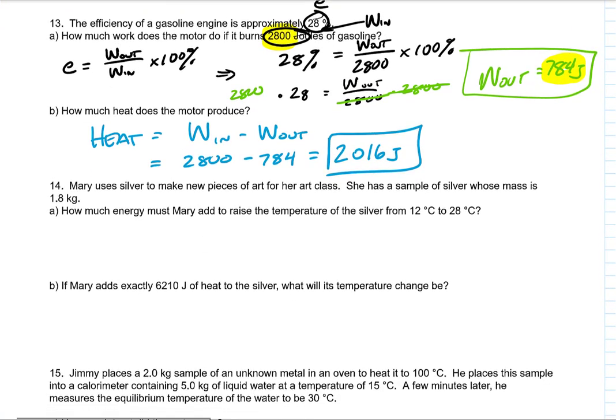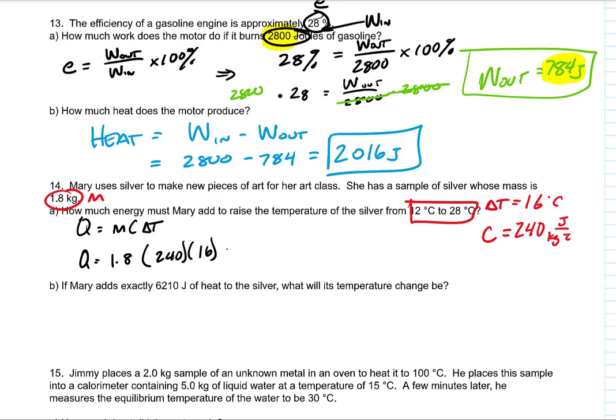Mary uses silver to make art. She has a sample of silver whose mass is 1.8 kilograms. How much energy must she add to raise it from 12 degrees to 28 degrees? My change in temperature is 16 degrees Celsius. We have a mass. And then for silver, our specific heat is 240 joules per kilogram degree Celsius. So our heat, Q, is equal to MC delta T. So Q equals 1.8 times 240 times 16, and it turns out that we need 6,912 joules to affect that temperature change.